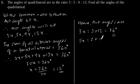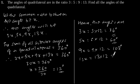5x = 5 × 12 = 60 degrees. 9x = 9 × 12 = 108 degrees. And 13x = 13 × 12 = 156 degrees.